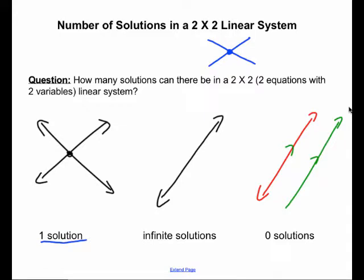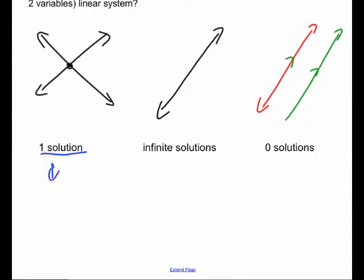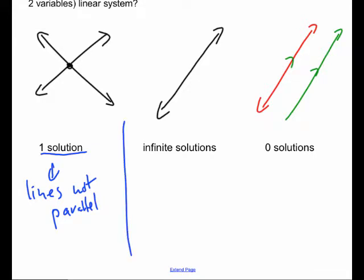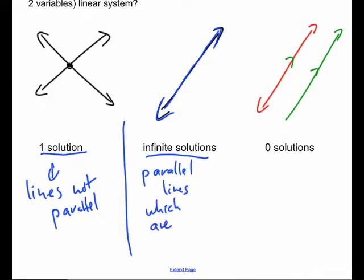We will get one solution if the two lines are not parallel. If the two lines are parallel, then we could either get an infinite number of solutions if the two lines happen to be the same line — all points on one match all points on the other. Or we have parallel lines which are completely different lines, which have no points in common, and therefore no solutions.